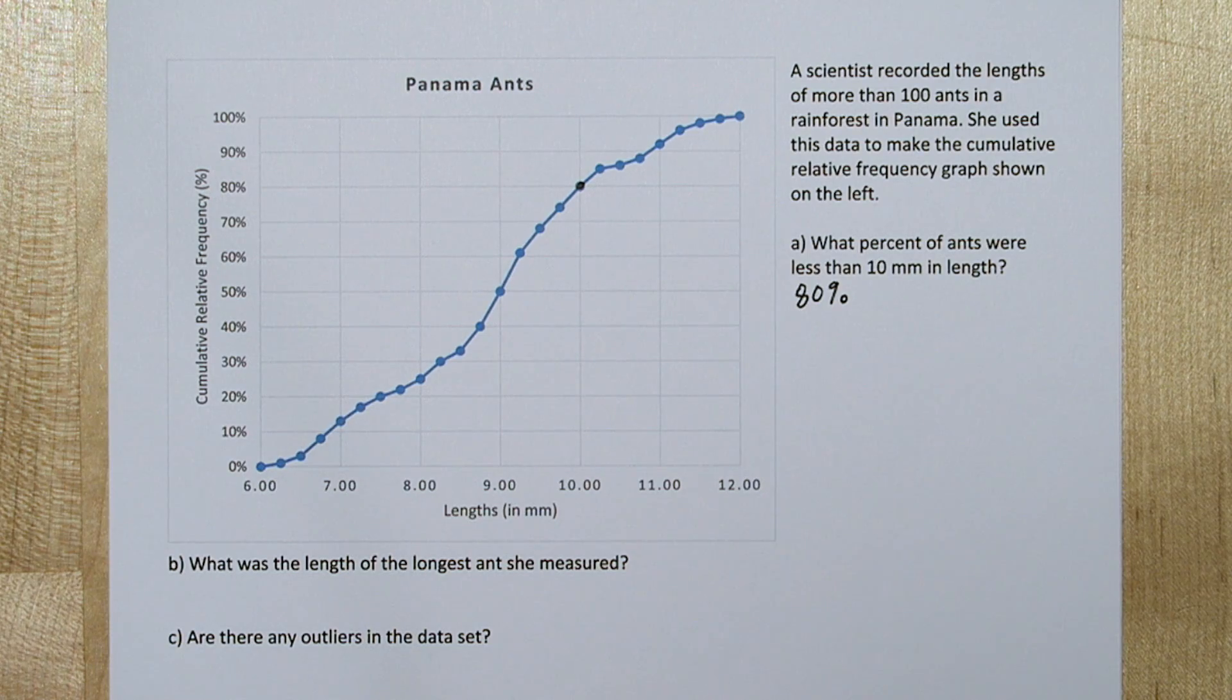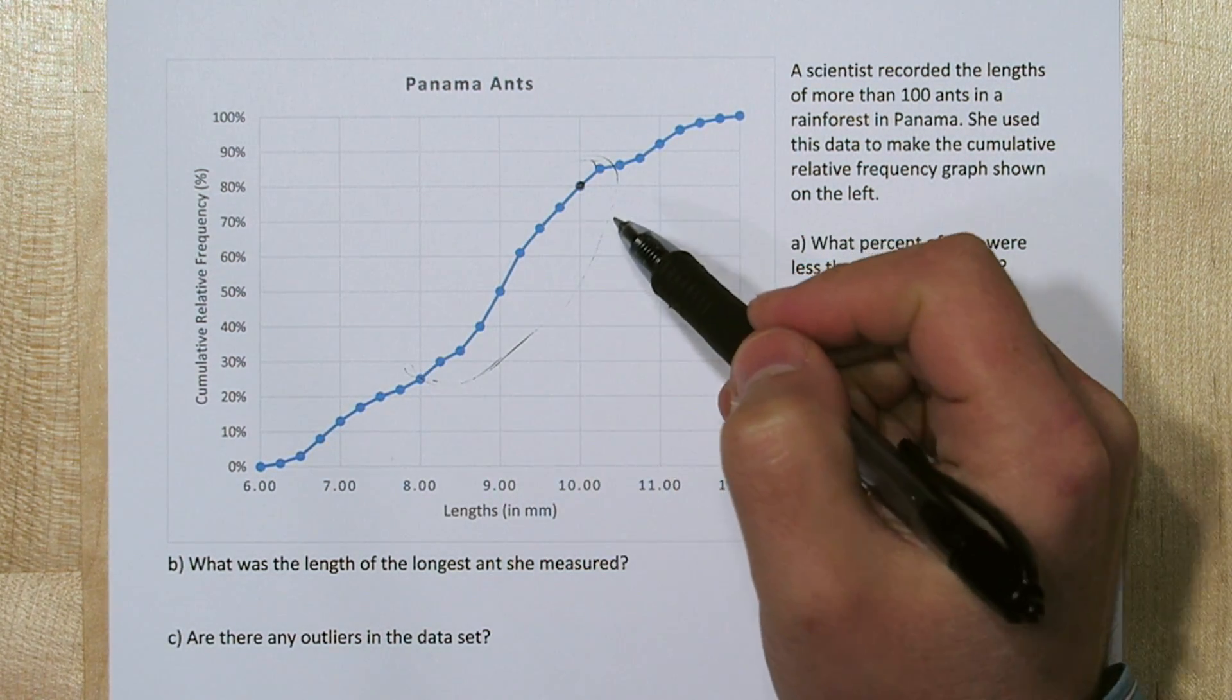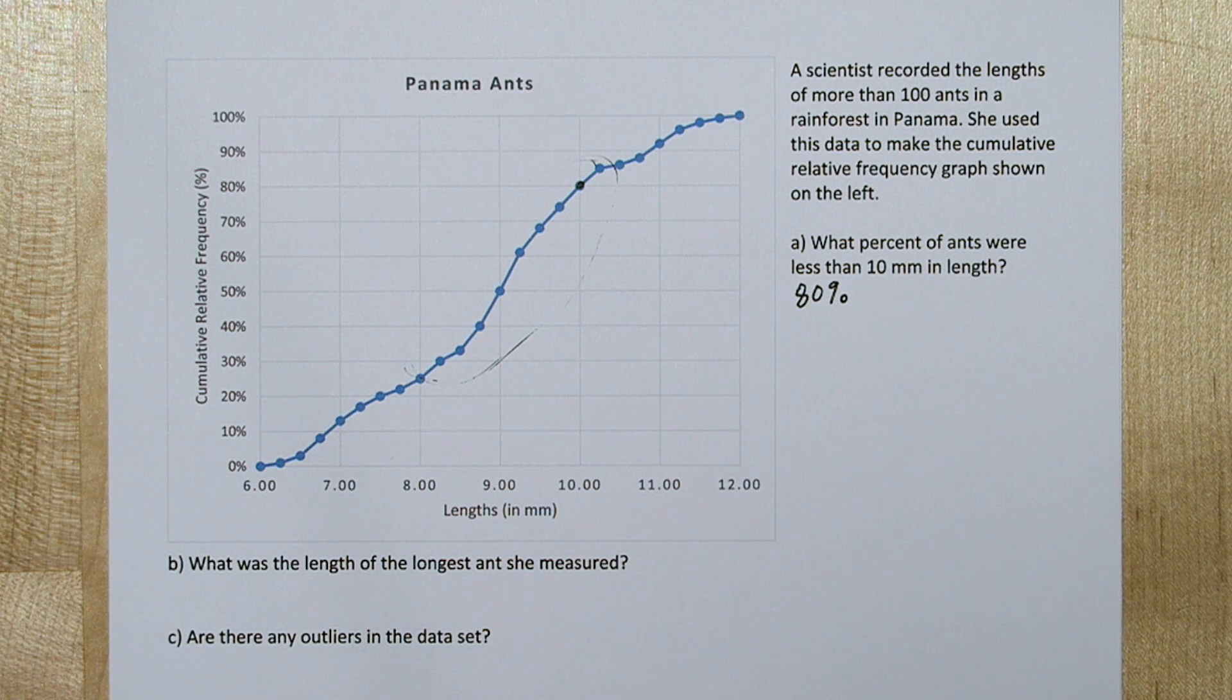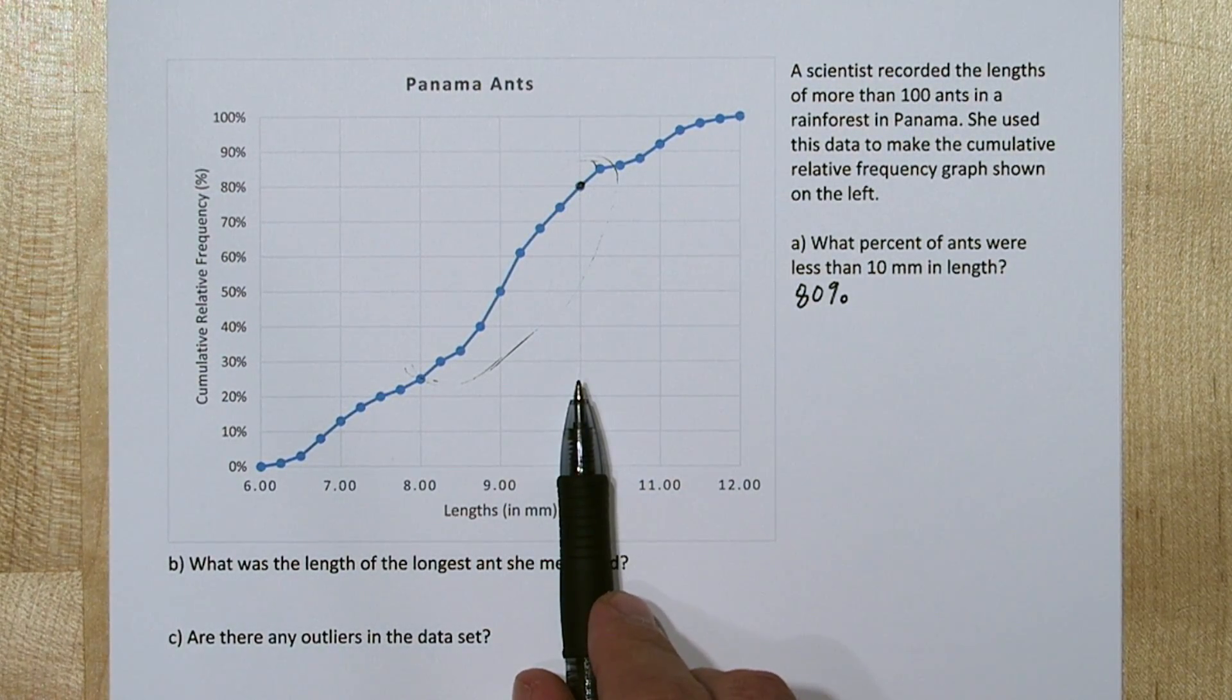Now ogives tell us a lot of information. If you look at the really steep slope here in the middle, the steeper slope, what that tells us is a large percentage of the ants that the scientists measured were between 8 and 10 millimeters.